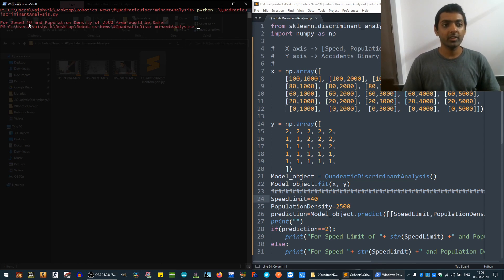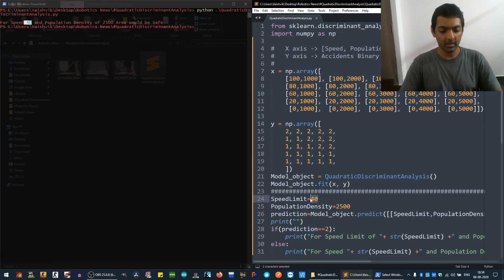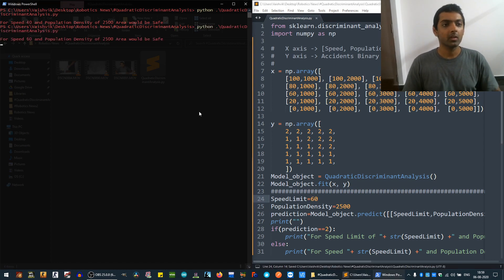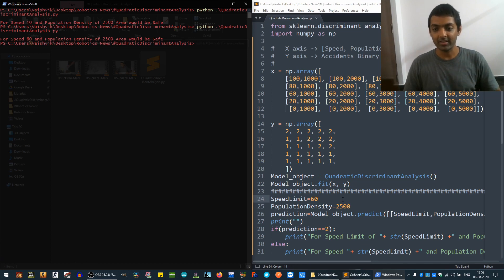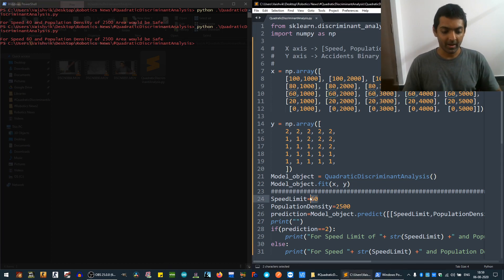For speed limit of 40 and population density of 2,500, this would be a good choice. For example, speed limit of 60 - it would still be fine because population density is really less. But let's say my speed limit was 80, it would not be safe.